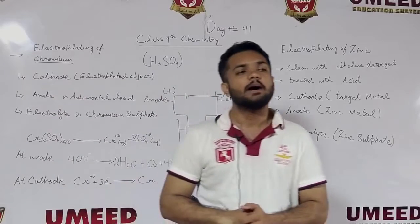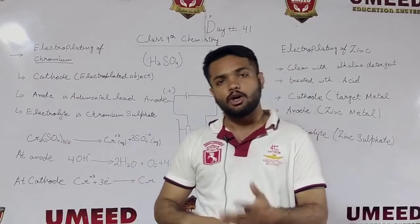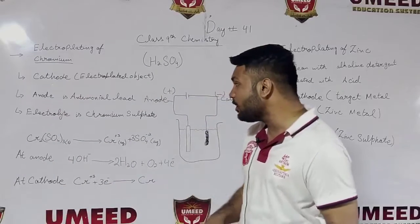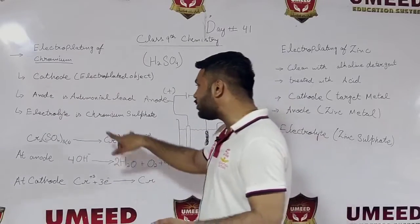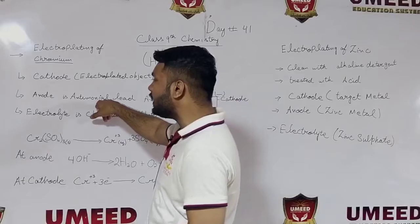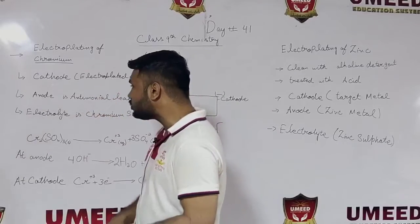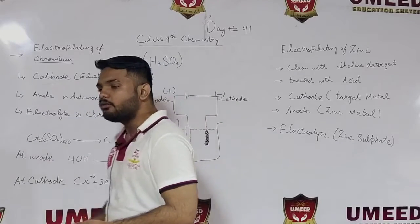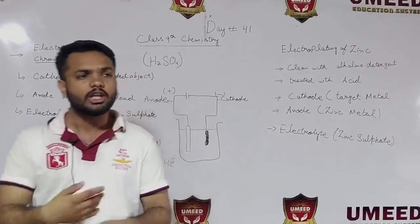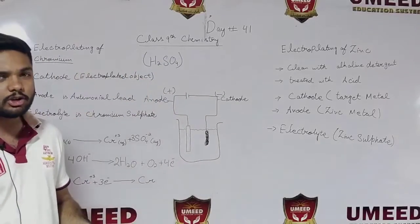After that, we have an anode. The anode is made by Chromium. So chromium will serve as our anode in this electroplating setup.